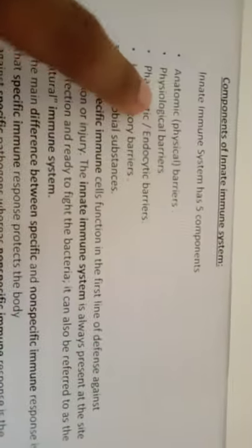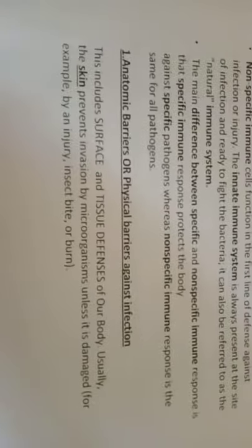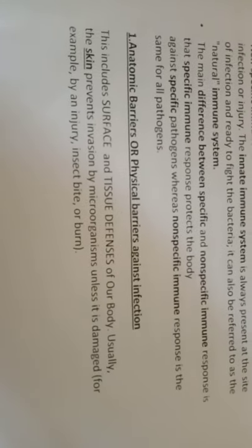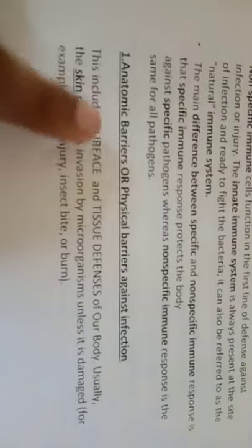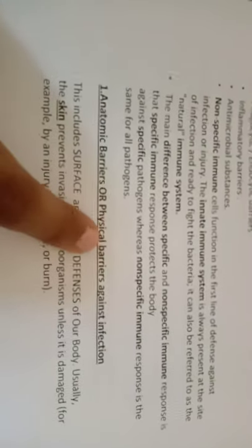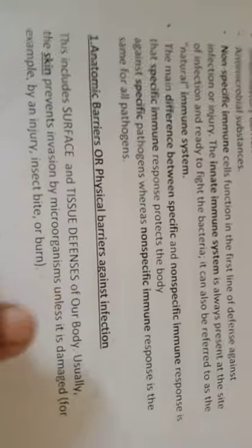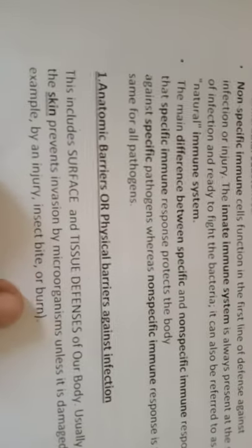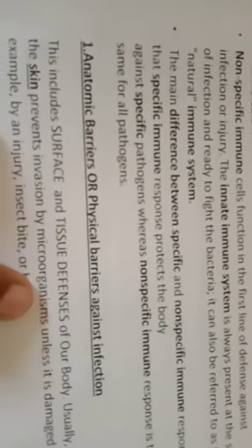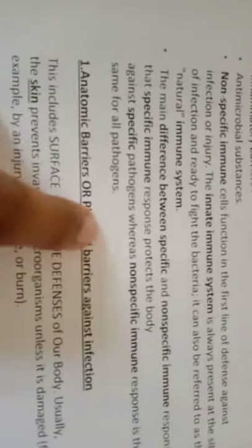The anatomic or physical barrier against infection includes surface and tissue defenses of our body. Usually the skin prevents invasion by microorganisms unless it is damaged — for example by an injury, insect bite, or burn. The surface represents the anatomical and physical barrier. If we protect our body, we prevent microorganism invasion.